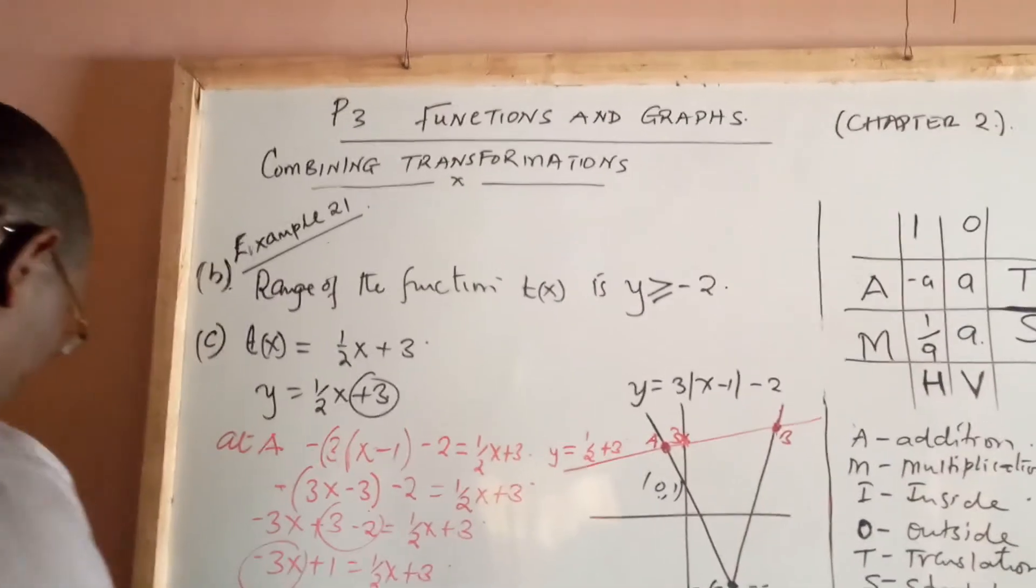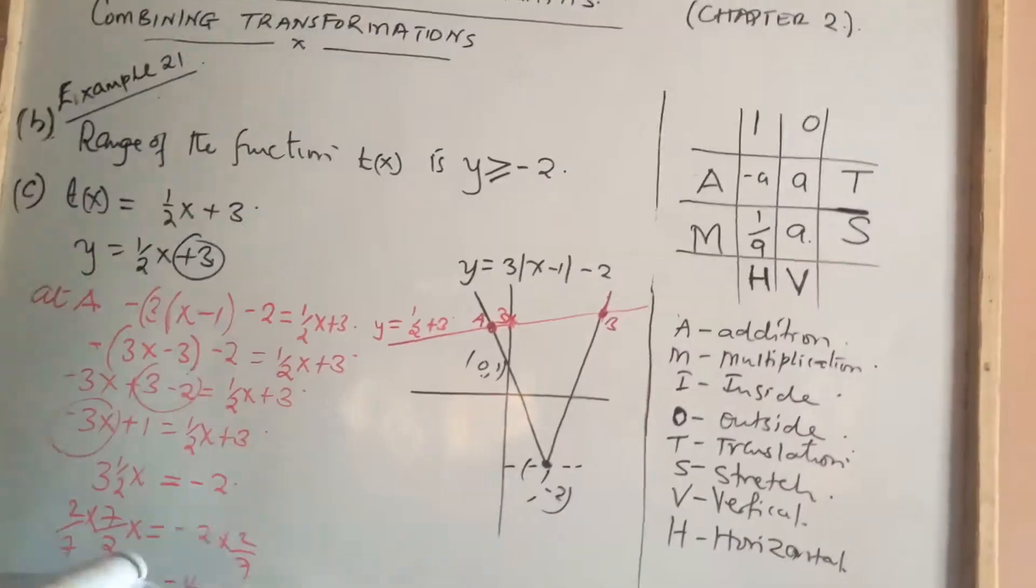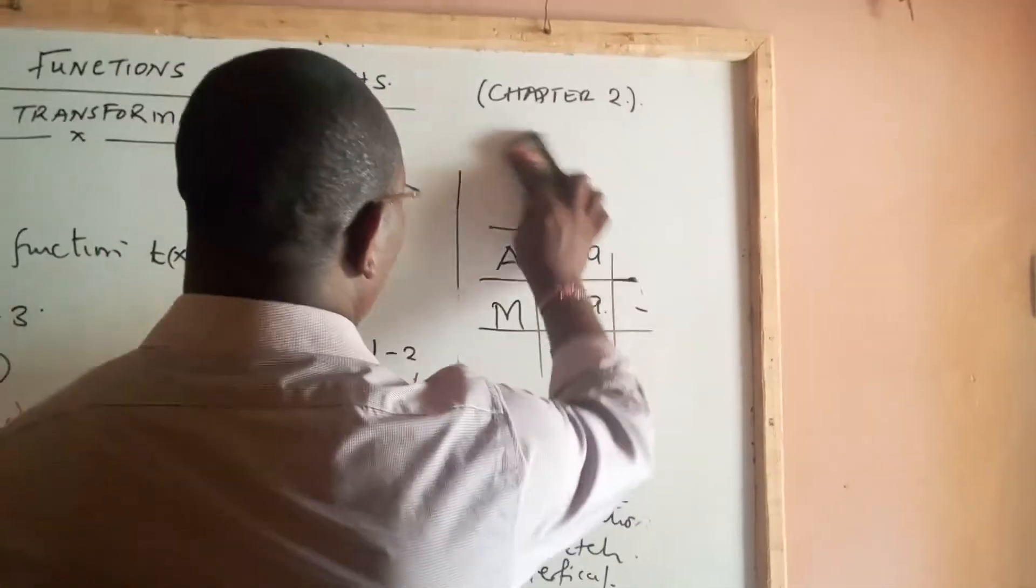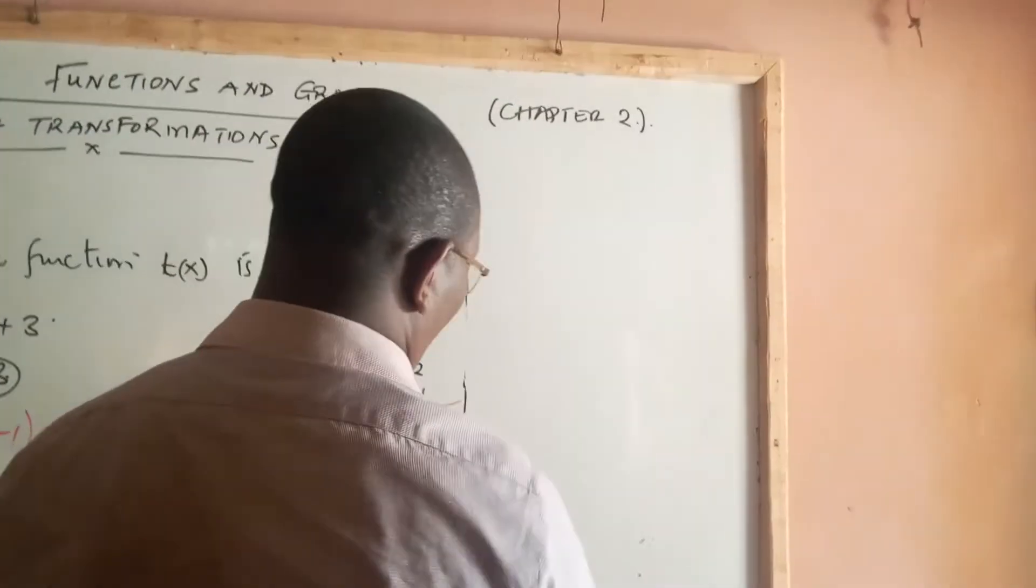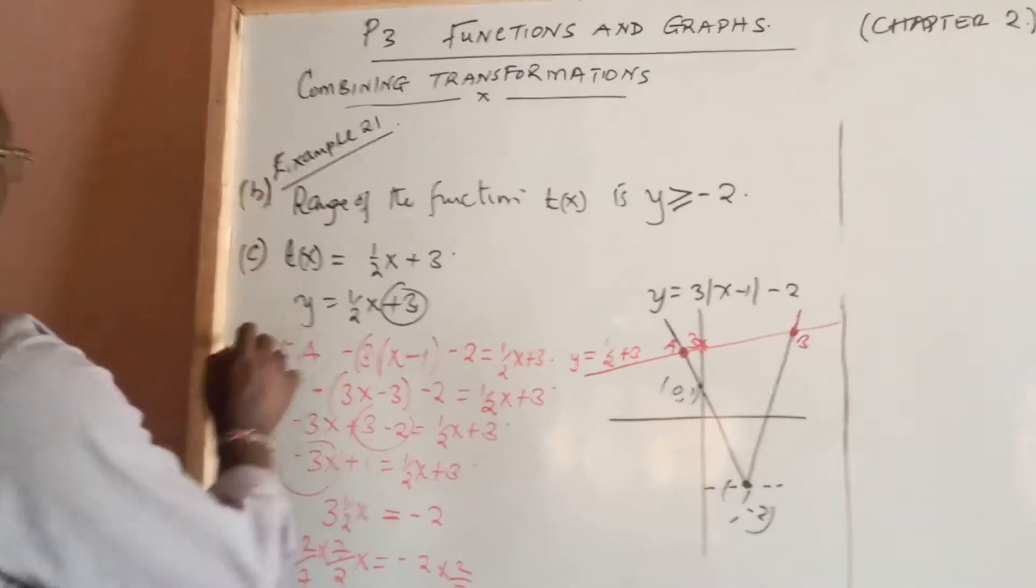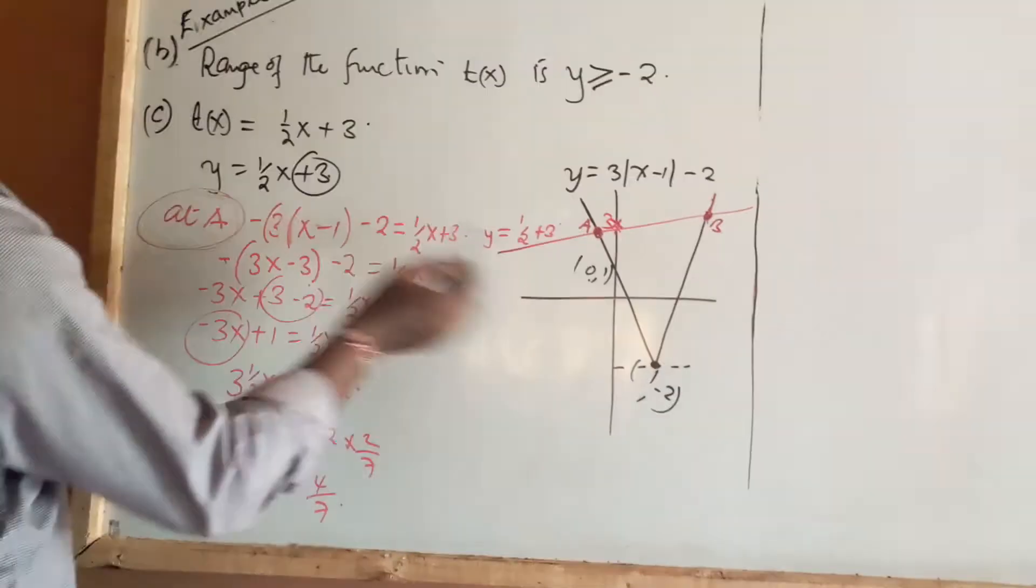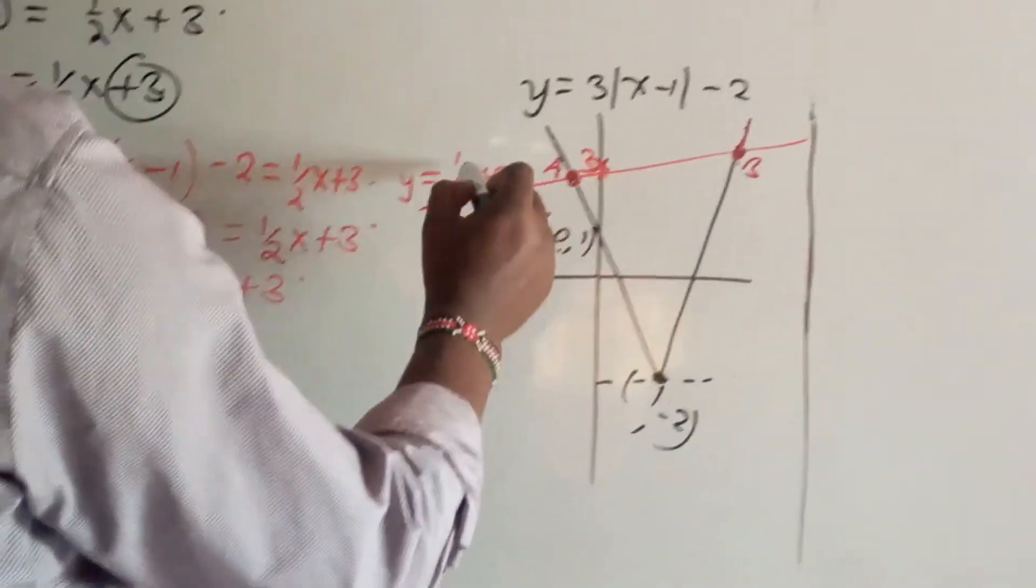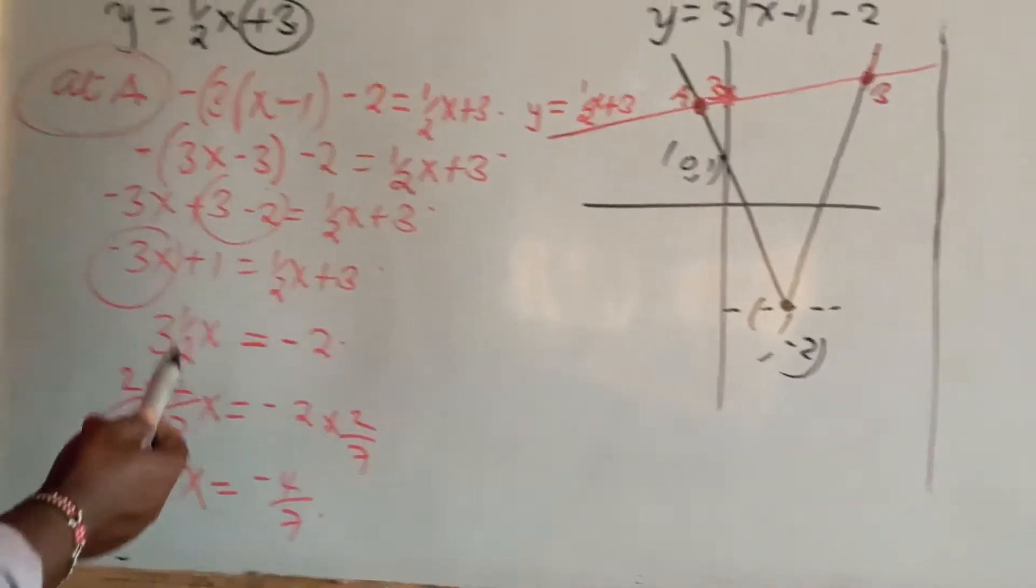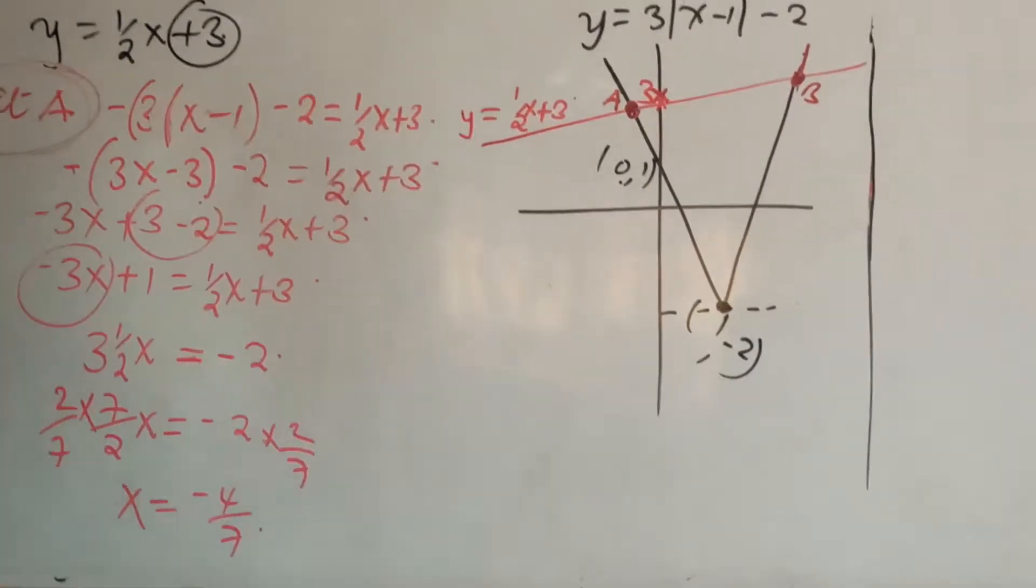There is still part B that we need to address. And for now, allow me to rub this part because we are not going to use it in this question. We have exhaustively found out the possible value of x at point A. Remember, the graph y = (1/2)x + 3 meets the graph of 3|x-1| at the module part. That's why we brought in the negative aspect.